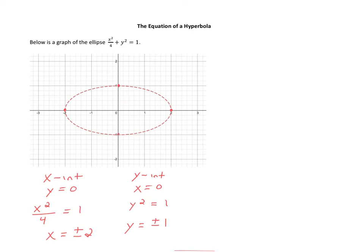So you get a point here and a point here. Now, what if I took this original equation, x squared over 4, and instead of a plus sign, I put a minus sign? How will this affect what the equation looks like by making this one minor change? One thing to check is whether we can find the x and y intercepts and reason out what the rest of the graph looks like.